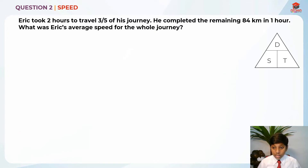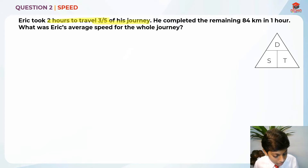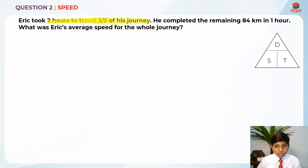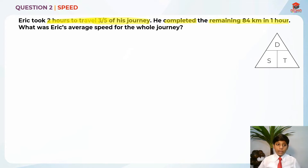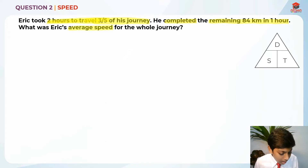So let's highlight the key information now. Eric took 2 hours to travel 3/5 of his journey, so 3/5 of his journey was traveled in 2 hours. He completed the remaining 84 kilometers in 1 hour. That means 2/5 is 84 kilometers and he did it in 1 hour. So they are asking us: what is Eric's average speed for the whole journey?